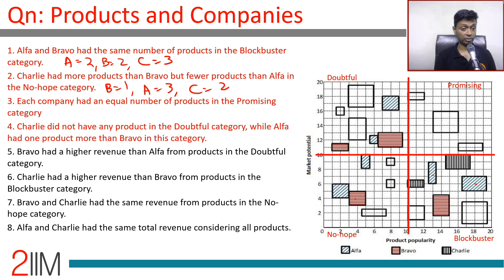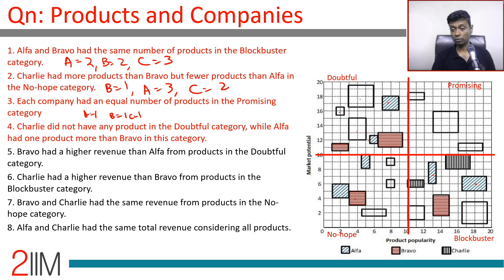Each company had an equal number of products in the Promising category — so one each for Alpha, Bravo, and Charlie. Charlie had no products in the Doubtful category, and Alpha had one more than Bravo in Doubtful. There are seven remaining Doubtful products, all between Alpha and Bravo: Alpha gets four, Bravo gets three.